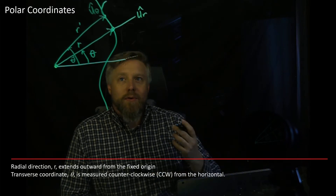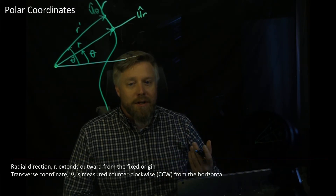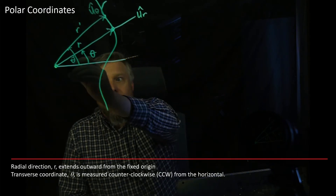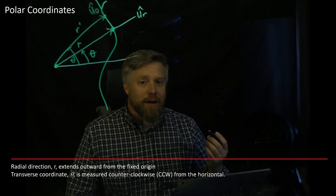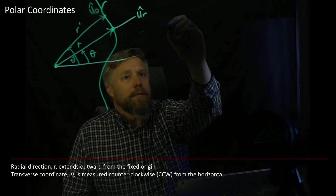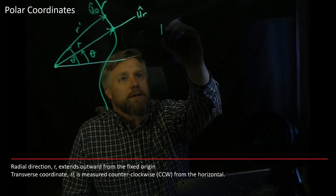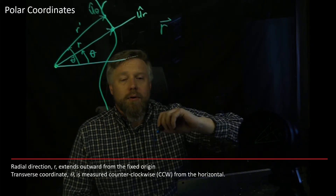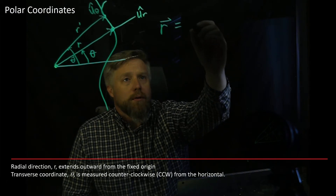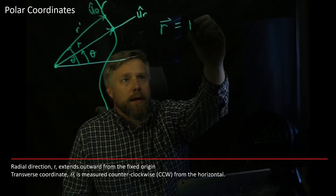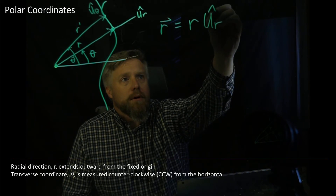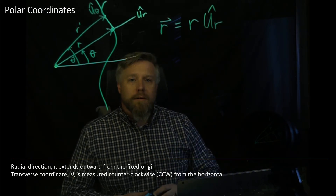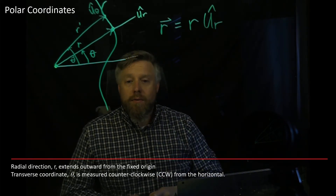So we have ur and u theta. They are perpendicular to each other. But for position, since we're going in the radial direction right along ur, it's going to be zero u theta. So our position vector in polar coordinates is always just going to have one component — a magnitude — and that magnitude is going to go in the ur direction.